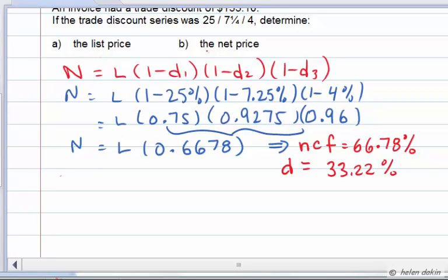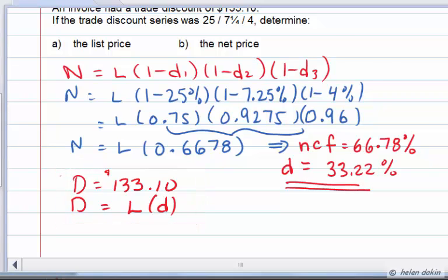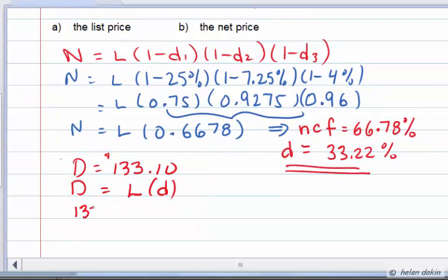Keep in mind that we don't know the list price and we don't know the net price, but we do know that the amount of discount is equal to $133.10. We also know that the amount of discount is the list price multiplied by the discount rate. So the amount of discount equals the list price multiplied by the discount rate. And we know that the single equivalent discount rate is 33.22%, so let's substitute that and say we've got $133.10, and that's equal to the list price multiplied by 0.3322.